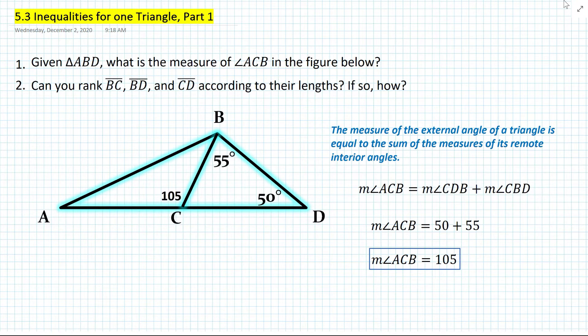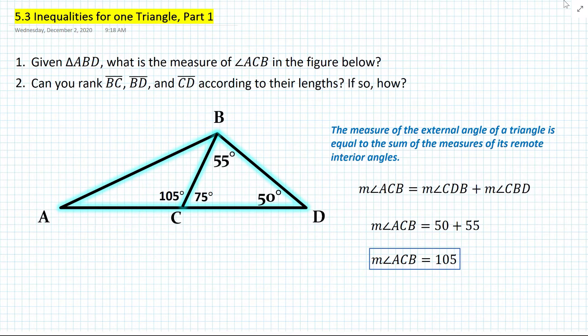For the second problem, how do we rank segment BC, segment BD, and segment CD according to their lengths? Let's first find the measure of angle BCD. We know that angle BCD and the 105 degrees for angle ACB are supplementary. Therefore, angle BCD must be 75 degrees, as shown in the diagram.